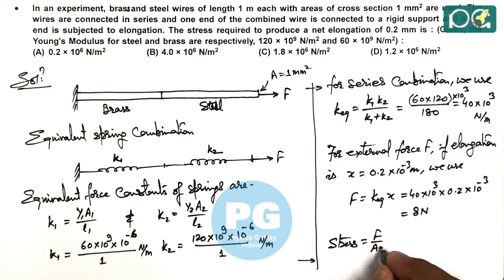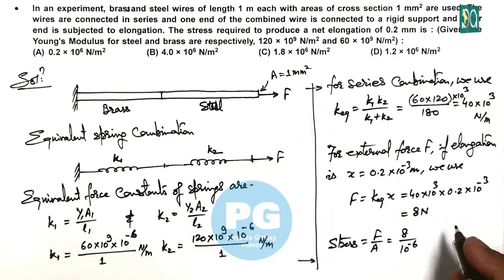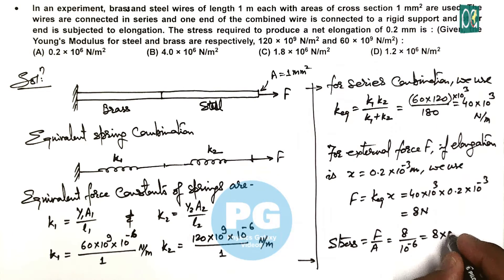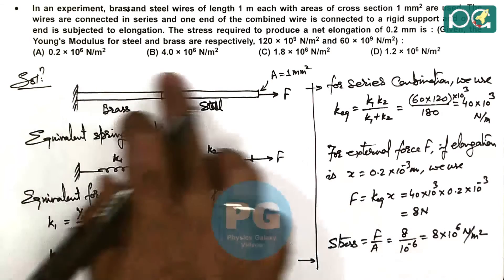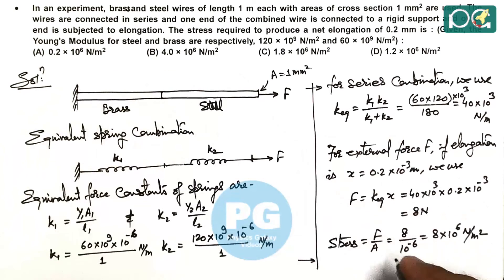If force is 8 Newton, we can calculate the stress as F/A. So this is 8/(10^-6), as it is 1 mm², so it is 8×10^6 Newton per meter square, which matches here. It is not matching with any of the given options, so here we can write none of the options is correct.